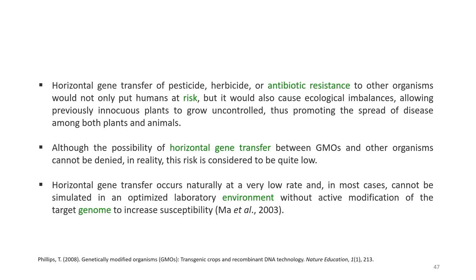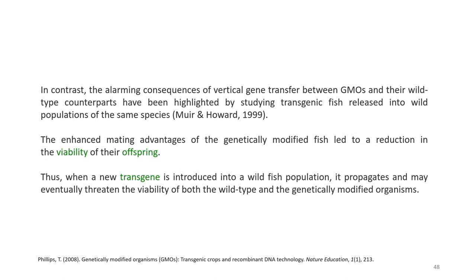Although the possibility of horizontal gene transfer between GMOs and other organisms cannot be denied, in reality this risk is considered quite low. Horizontal gene transfer occurs naturally at a very low rate and in most cases cannot be simulated in an optimized laboratory environment without active modification of the target genome to increase susceptibility, as reported by Ma et al. 2003. In contrast, the alarming consequences of vertical gene transfer between GMOs and their wild-type counterparts have been highlighted by studying transgenic fish released into wild populations. The enhanced mating advantage of the genetically modified fish led to a reduction in the viability of their offspring, and when a new transgenic is introduced into a wild fish population, it propagates and may eventually threaten the viability of both the wild-type and the genetically modified organisms.